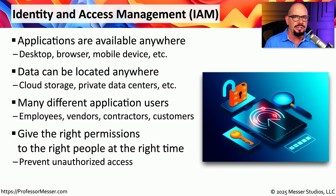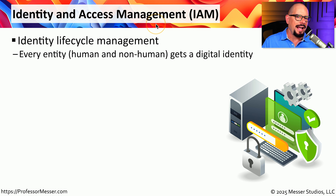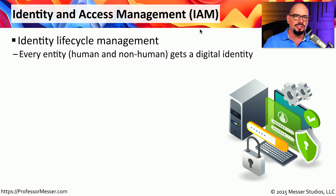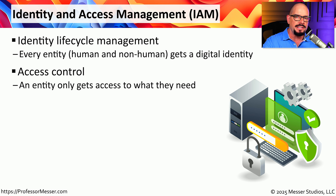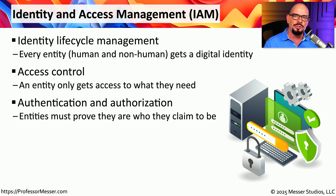The challenge is making sure that the person who needs access to the data gets exactly the type of data required for their particular job function. We might have employees that need additional data access, and customers that should only see data associated with themselves. To manage all of this, we need Identity and Access Management, or IAM. This provides a set of life cycle management for the identity of people. Every person and every device is granted a digital identity, which allows us to manage that device or individual. We can provide access control so that each entity only gets access to the data required, along with strong authentication and authorization with multiple factors.